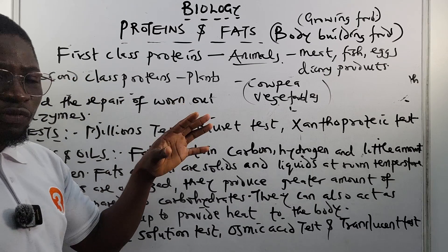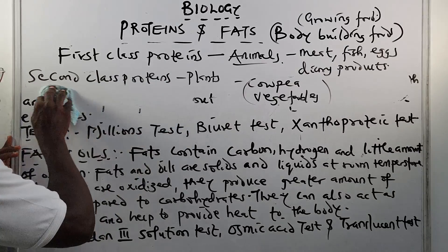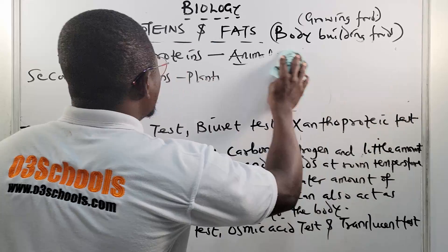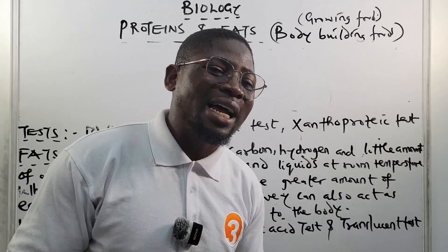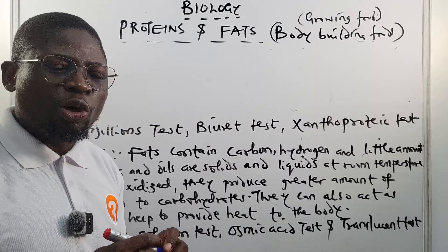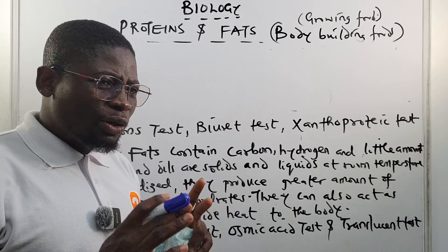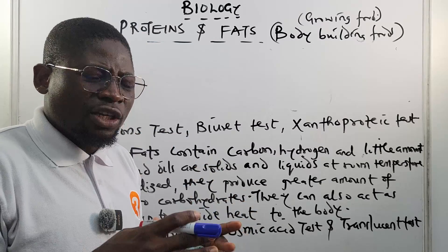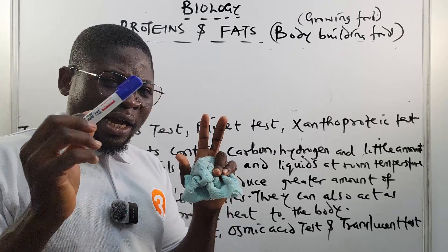So proteins found in animals are called first-class proteins — meat, fish, eggs, dairy products — while second-class proteins are those found in plants like cowpea and some vegetables. It is also important to know that there are up to a hundred amino acids available in nature, but the body only needs about 20 of them to make all the protein the body needs.